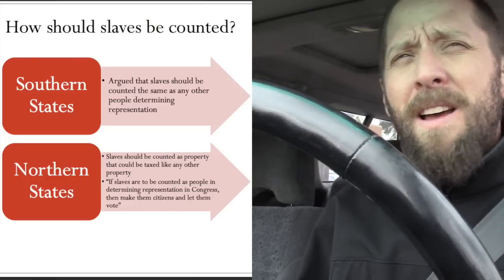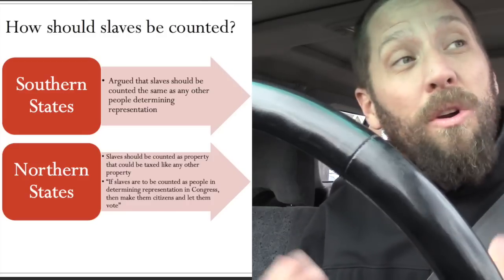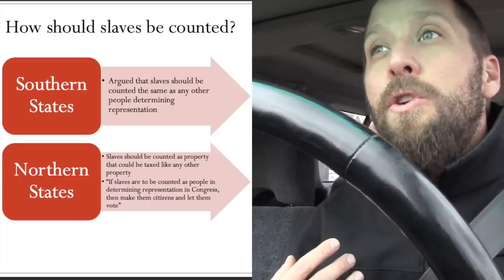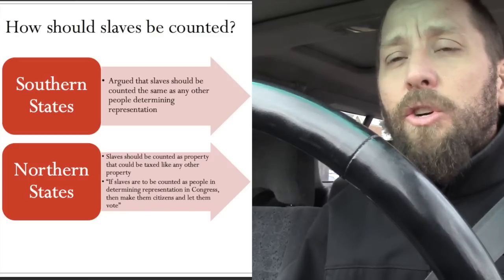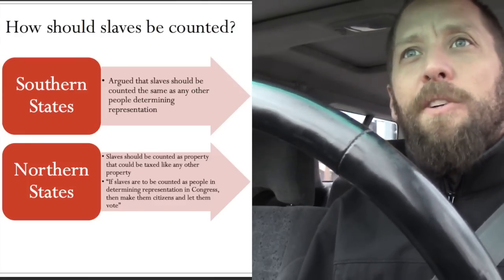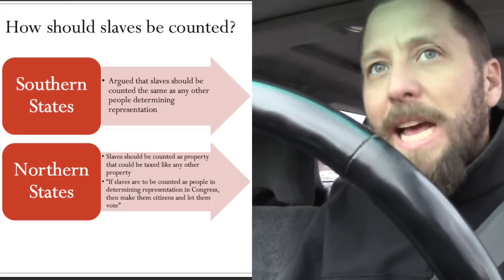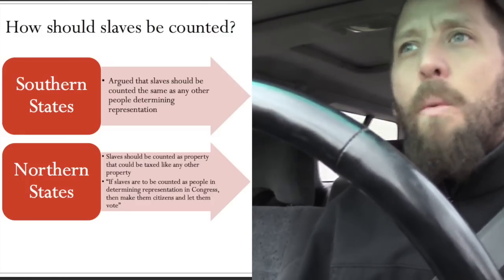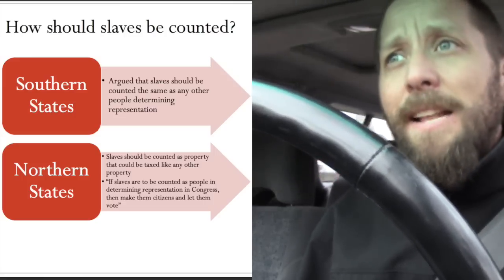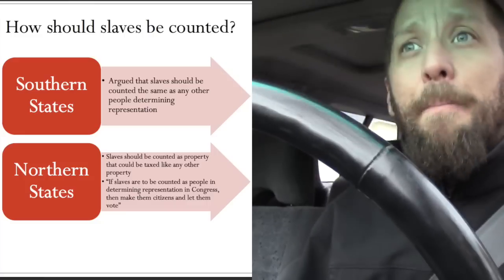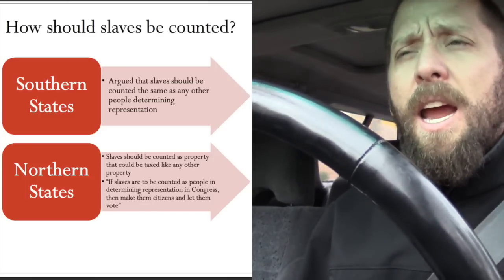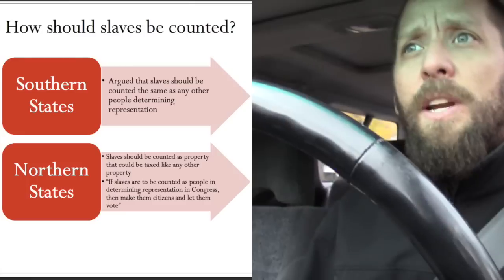The north was like, wait, that doesn't make any sense. We can compare and contrast the different points of view. The northerners said: you treat slaves as property, you don't count them as citizens, they have no rights of citizens — so why would you get more power for something you consider property? You don't get more power the more horses you have in the south, so why count slaves as part of your population to give wealthy landowners more power?